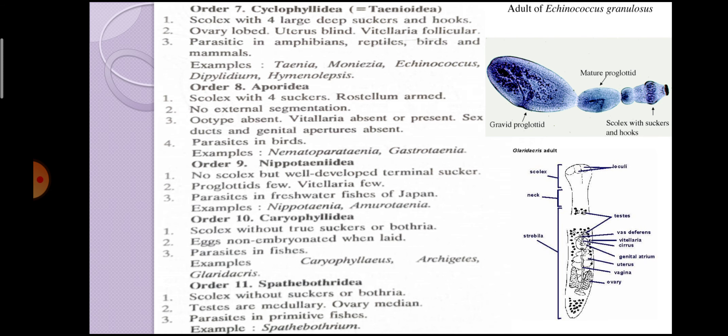The structure shown below Echinococcus is the example for the tenth order Caryophyllidea — that is Glaridacris. This is the figure for Glaridacris, which is included in Order Caryophyllidea. Above is Echinococcus and below is the diagram of Glaridacris. So this was all about the classification of Phylum Platyhelminthes. Thank you very much.